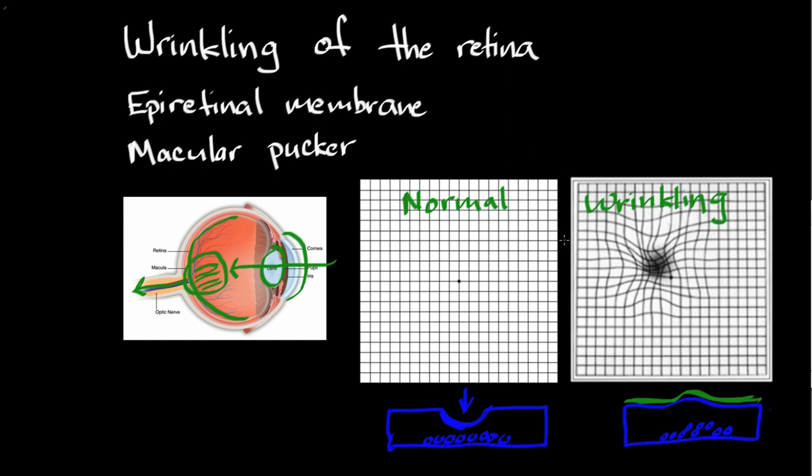So somebody with wrinkling of the retina, or an epiretinal membrane, or a macular pucker, will tell me that the lines that they see aren't straight up and down, but rather curvy.